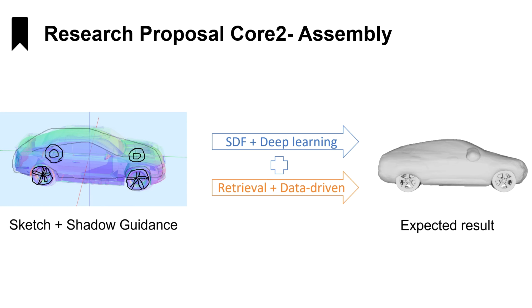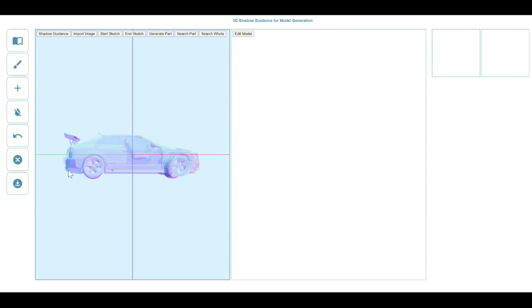Now I will show you a demo to see how to use our system and user interface. First, the user draws the contour of the car shell and then uses the generation method to get the car shell part model.